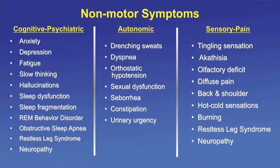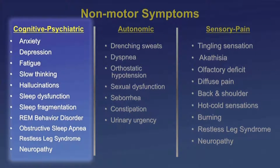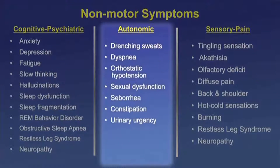Non-motor symptoms are divided into three categories: cognitive and psychiatric, autonomic, and sensory and pain. Anxiety, depression, fatigue, slow thinking, hallucinations, and sleep dysfunction are all common in advanced Parkinson's patients. Sleep fragmentation and excessive daytime sleepiness are common. REM behavior disorder occurs in 30 to 50 percent of patients but can anticipate the motor diagnosis. Sixty percent of patients with REM behavior disorder will develop Parkinson's, Lewy body disease, or multi-system atrophy. Markers in the cognitive and psychiatric category are depression and REM behavior disorder.